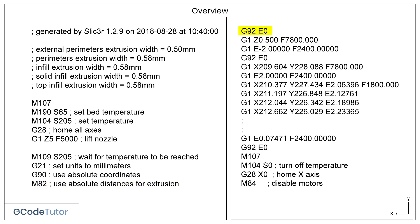The G92 command is used to set the start position, which is the origin of one or more axes. In this case, we're setting our extruder head to zero. Here we have our first movement line using the G1 command. The Z dimension brings our nozzle half a millimetre off the bed of the table, assuming our datum position is zero on the bed.